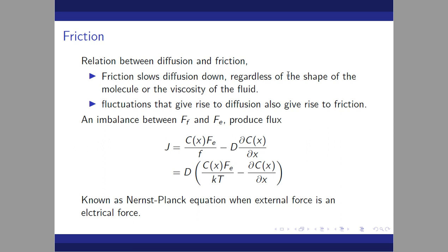Friction slows diffusion due to the shape of the molecule or the viscosity of the fluid. The fluctuations that give rise to diffusion also give rise to friction. The imbalance between friction force Ff and external force Fe produces a flux: J = D × Cx × Fe/(kT) − D × ∂Cx/∂x. This is known as the Nernst-Planck equation when the external force is an electrical force.